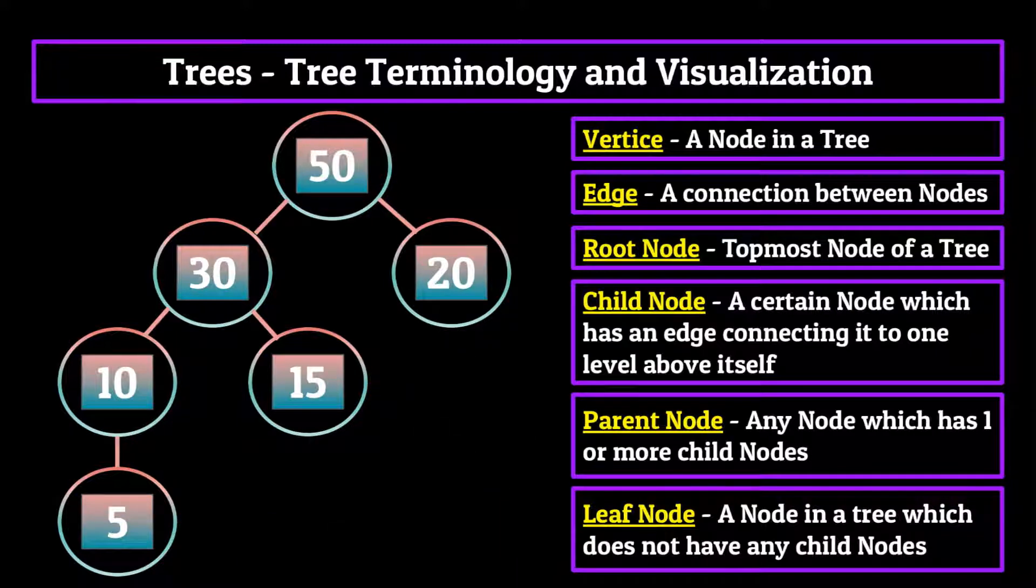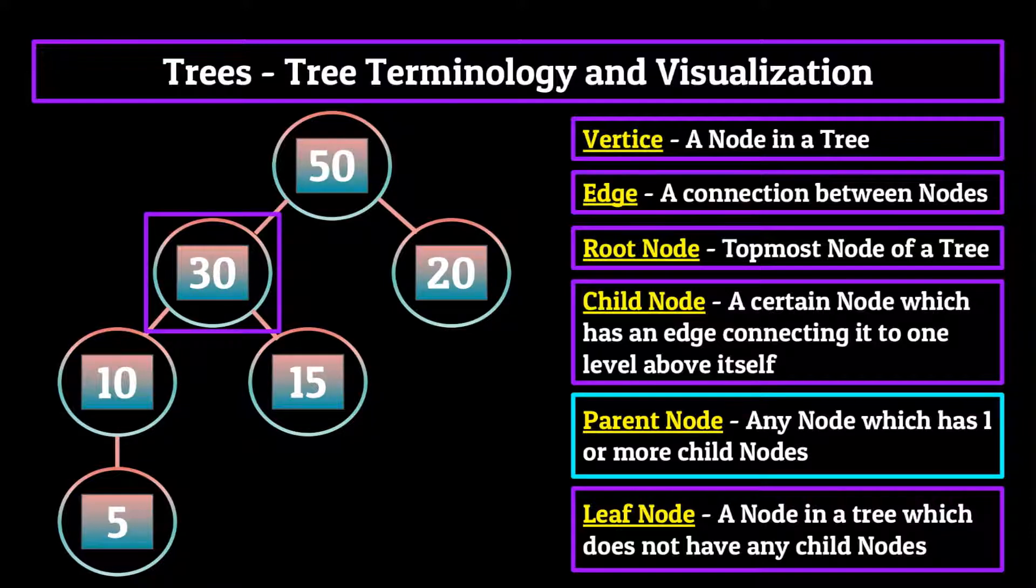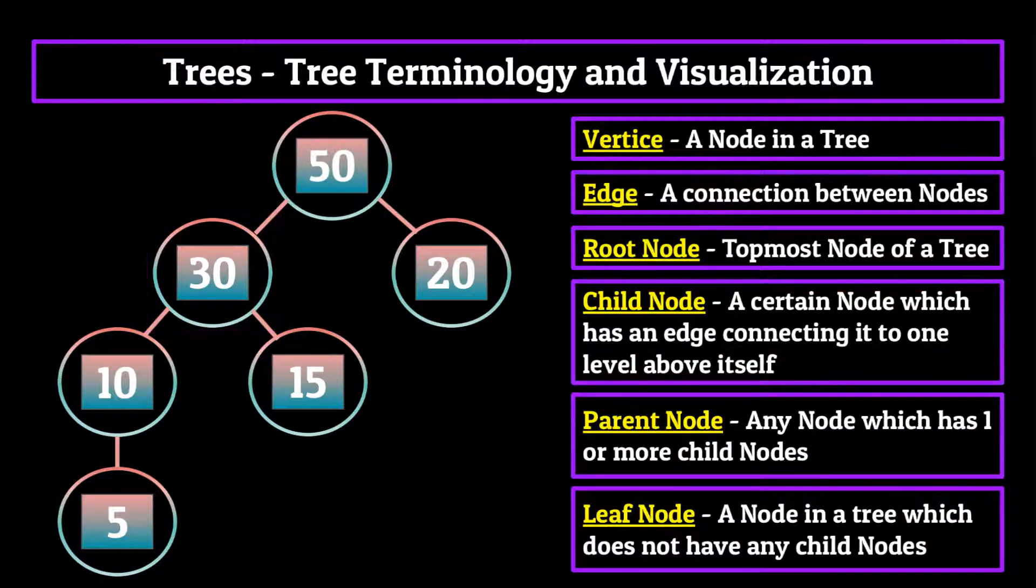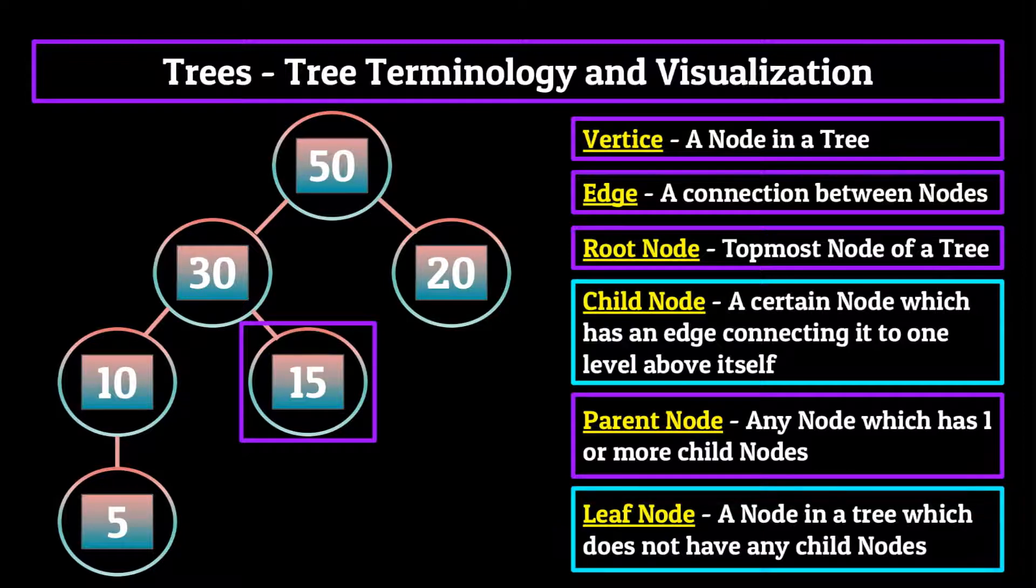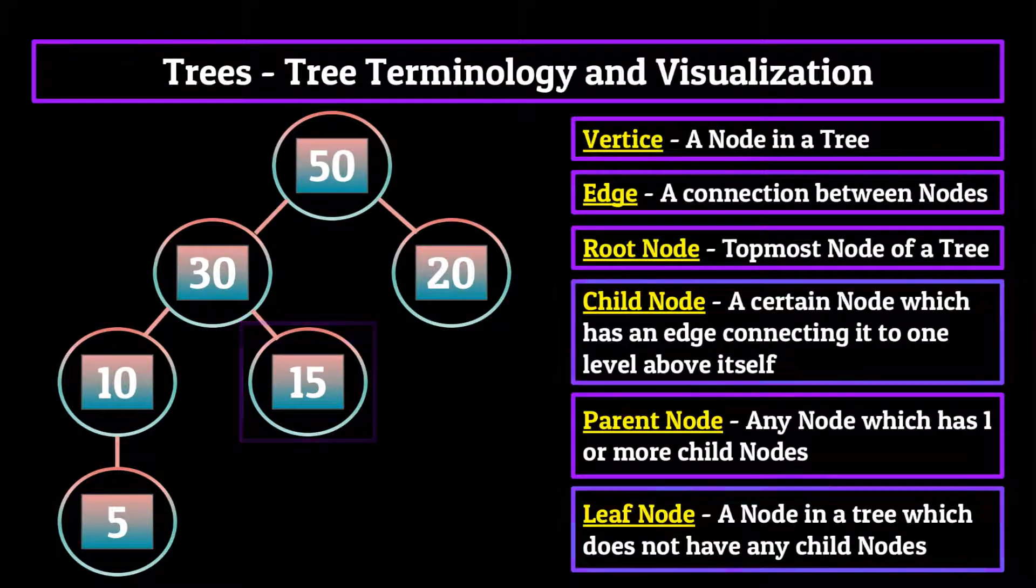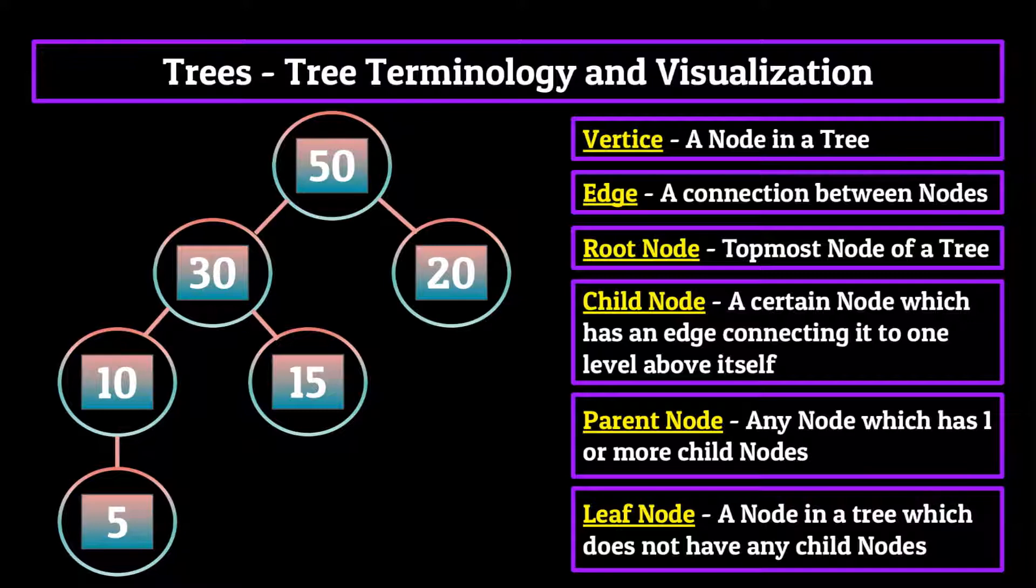As you can see, one node or vertex on our tree can have many different titles depending on where it is in the tree and what other nodes it connects towards. For example, the 30 node is both a parent node to the 10 and 15 nodes, but also a child node of the 50 node. The 15 node is both a child of the 30 node and also a leaf node as it has no children. This terminology really comes in handy when we start talking about trees which contain thousands of vertices and edges, and the data becomes very complicated to order and define.